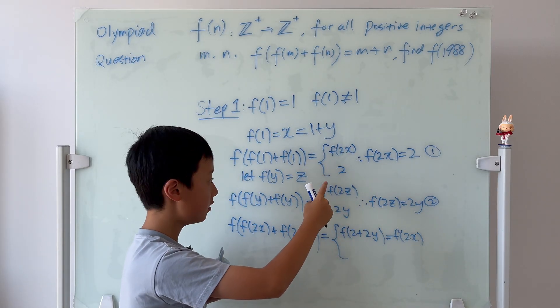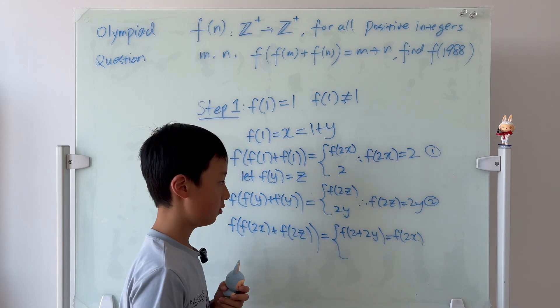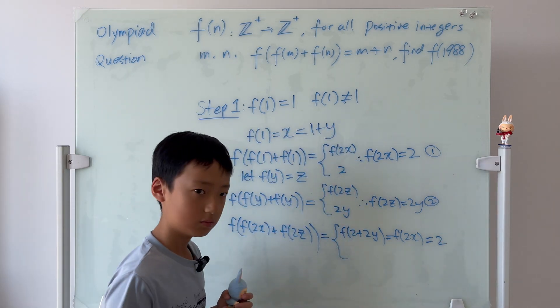And, we look back at equation 1. f of 2x is equal to 2. So, this is actually equal to 2. Nice.